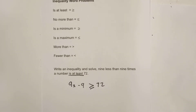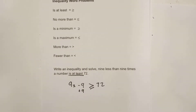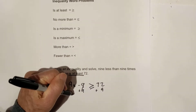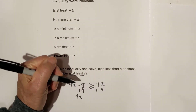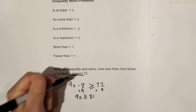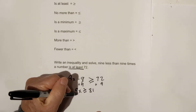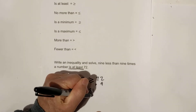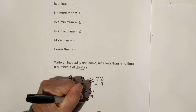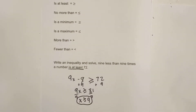Now we just solve it like a normal inequality. We're going to add nine to both sides. These cancel, so we bring down: 9x is greater than or equal to 72 plus 9, which is 81. Then we're going to divide each side by nine. So x is greater than or equal to nine.